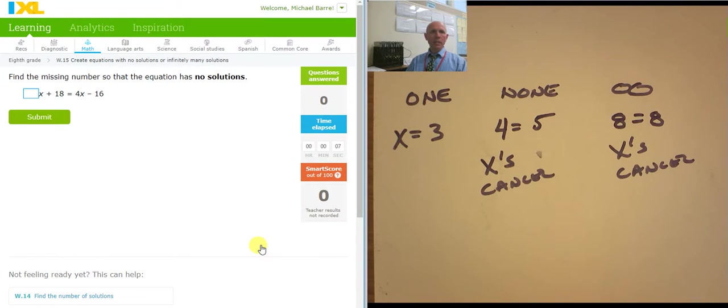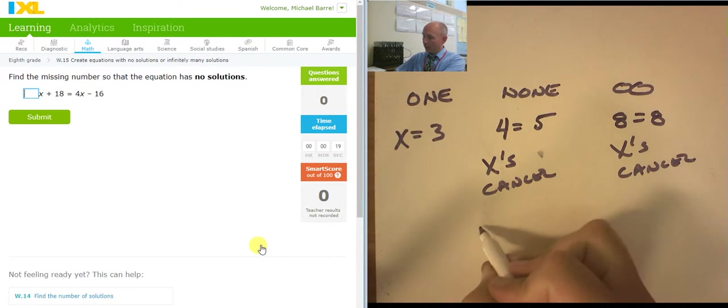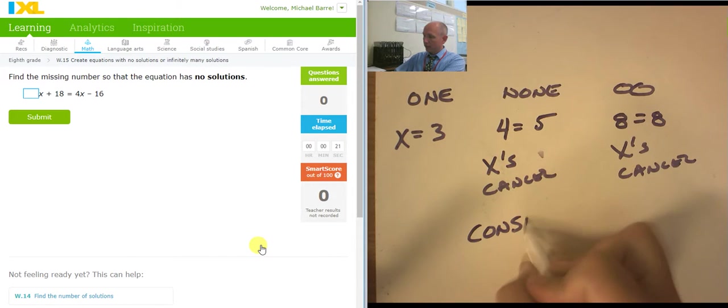This is Mr. Barr, and this video is creating equations with no solutions or infinitely many solutions. So here's the deal. When I have no solution, the x's are going to cancel out, but the constants are not going to cancel out. X's cancel, constants don't.